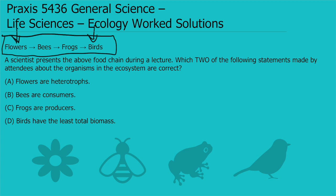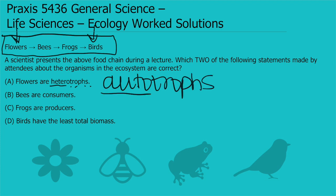Answer A says flowers are heterotrophs. What is a heterotroph? Hetero means other, and troph is like feeding. So a heterotroph is something that feeds on others in order to get the energy it needs to stay alive. Flowers and plants and photosynthetic organisms are actually autotrophs, and autotrophs make their own food. So flowers are not heterotrophs — they are autotrophs.